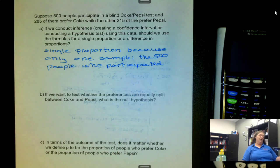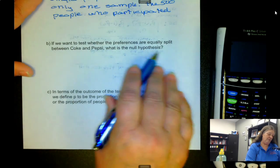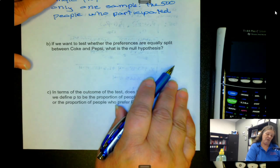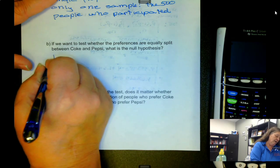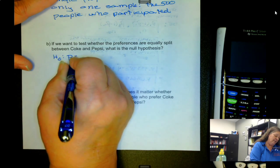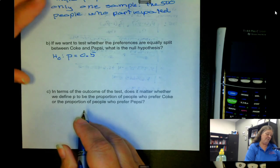The fact that part preferred Coke and part preferred Pepsi is just giving the two choices that we had. So we want to test whether the preferences are equally split between Coke and Pepsi. What would the null hypothesis be? Well if it's equally split, then the null hypothesis would be that p equals 0.5.